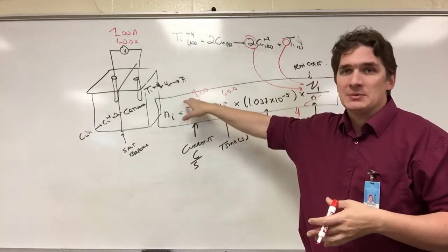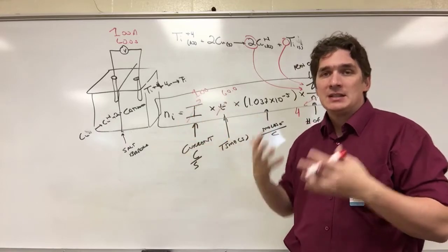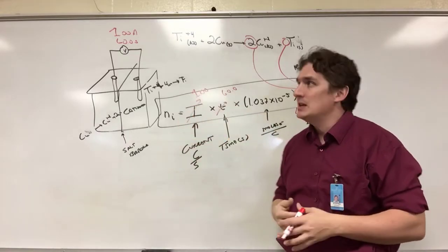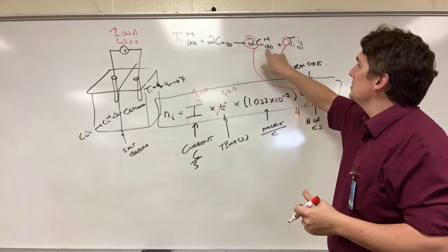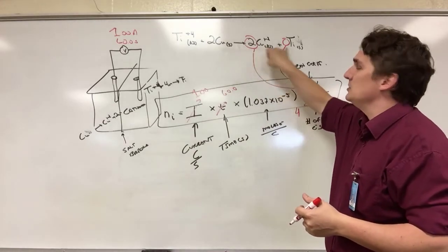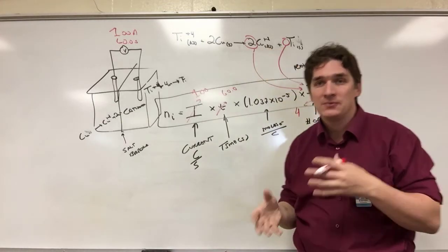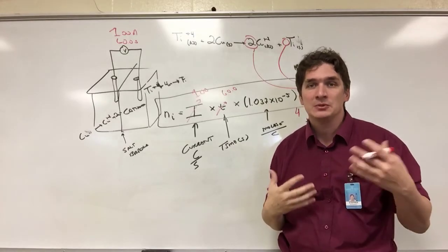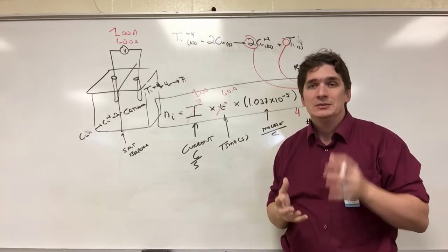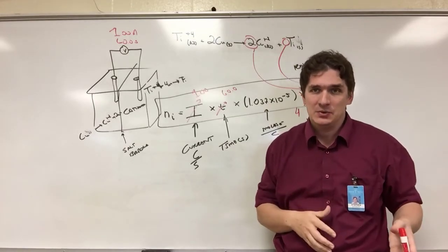If we changed to two amps, we'd double how much we have. Conceptually, it should make sense that we're going to lose twice as many moles of copper as moles of titanium, because of the stoichiometry in the balanced reaction.